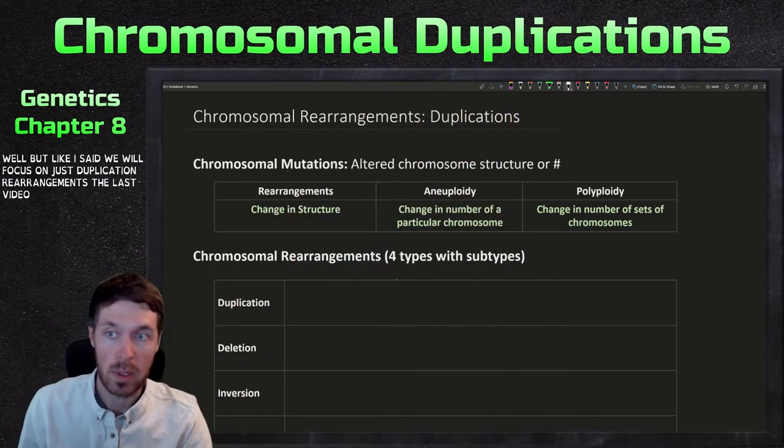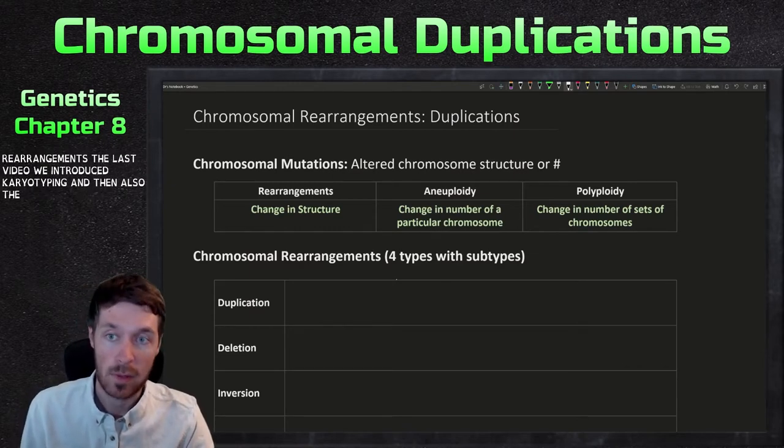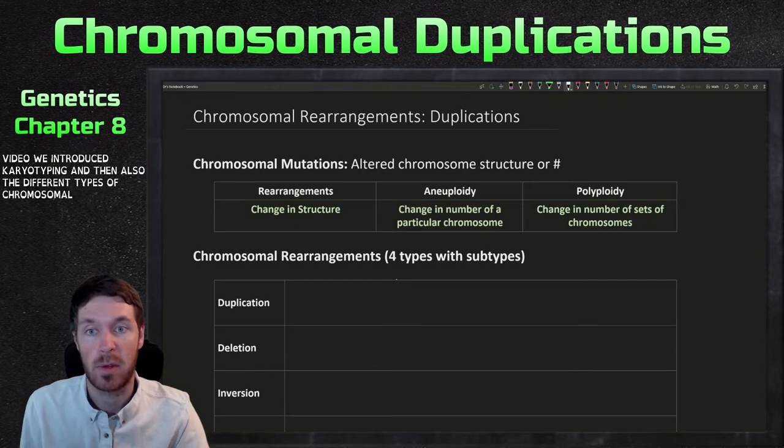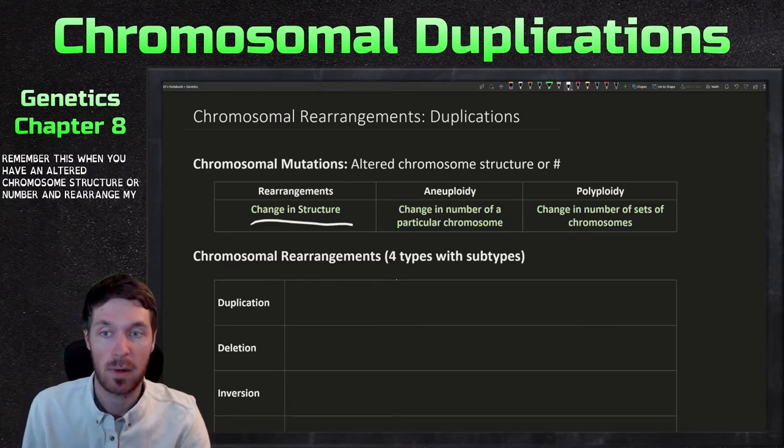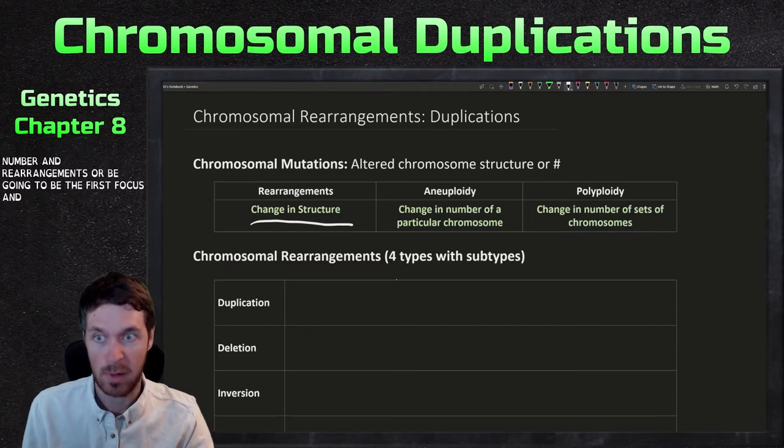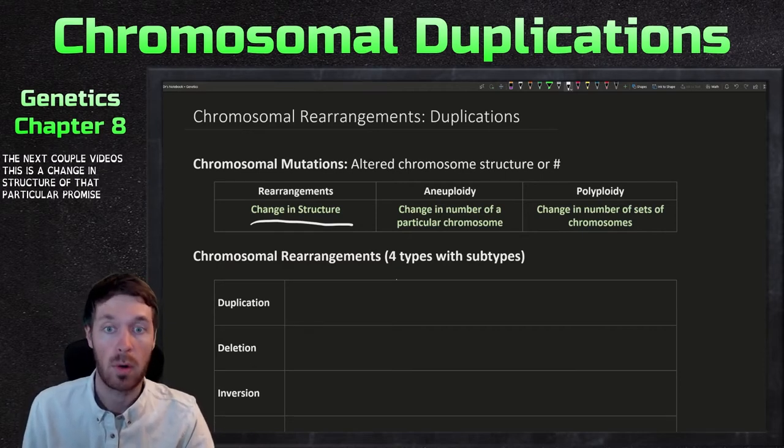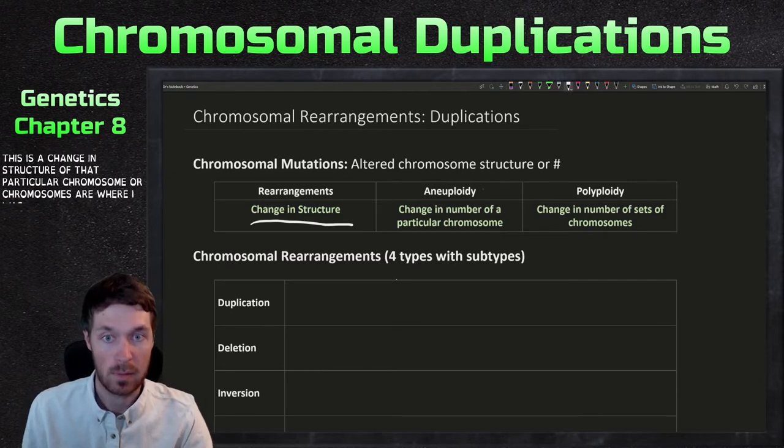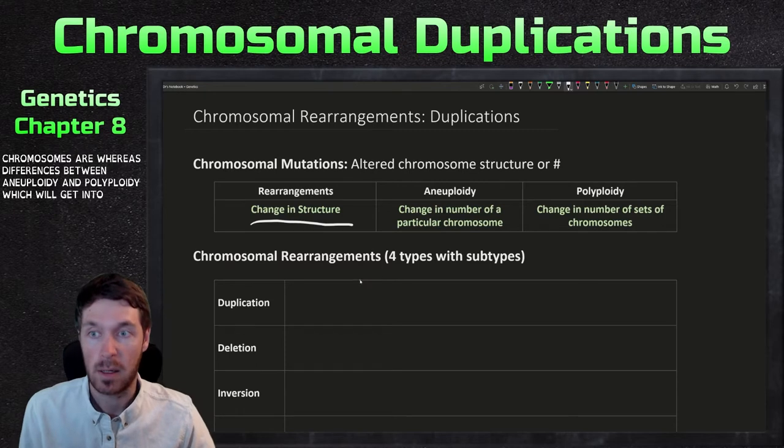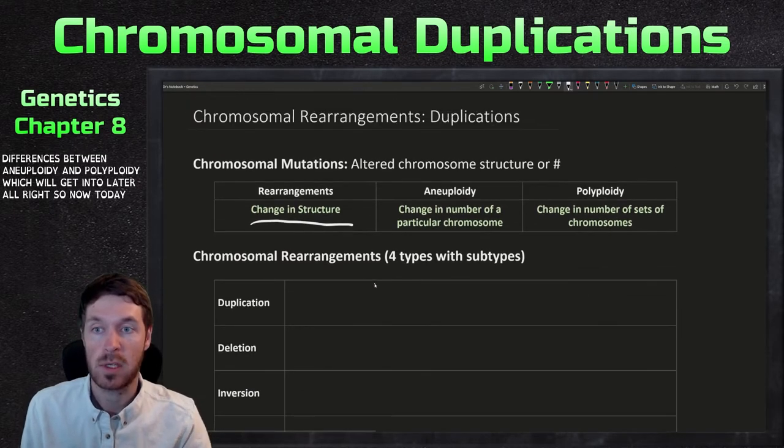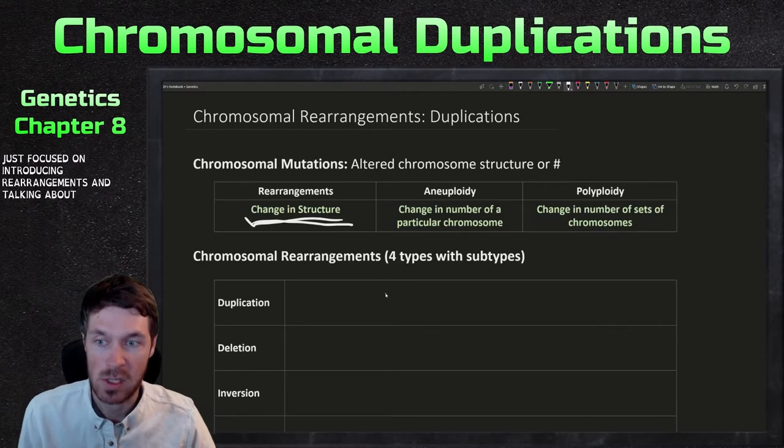So the last video, we introduced karyotyping and the different types of chromosomal mutations. Remember, this is when you have an altered chromosome structure or number. And rearrangements are going to be the first focus of the next couple of videos. This is a change in structure of that particular chromosome or chromosomes, whereas differences between aneuploidy and polyploidy, which we'll get into later. So now today, we're just focused on introducing rearrangements and talking about duplications in more detail.